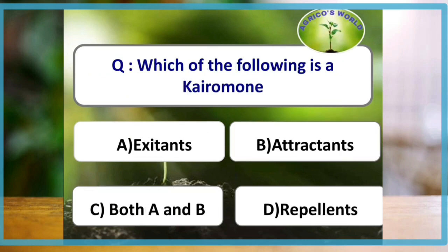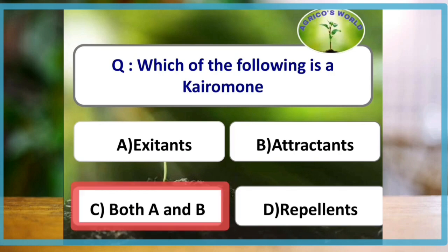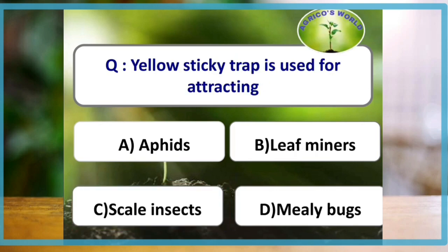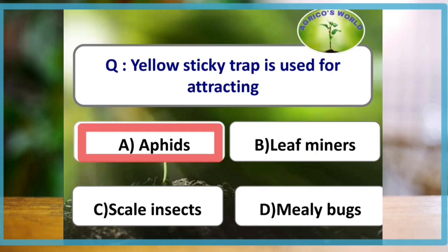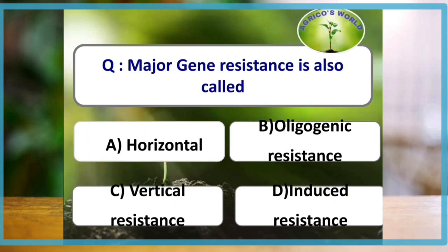Which of the following is known as kairomone? Both excitants and attractants are known as kairomone. Yellow sticky trap is used for attracting which of the following pest? The answer is aphids.